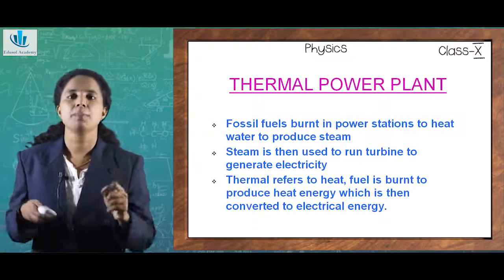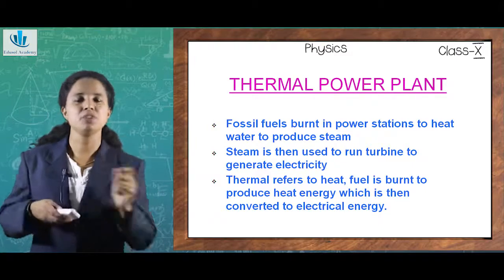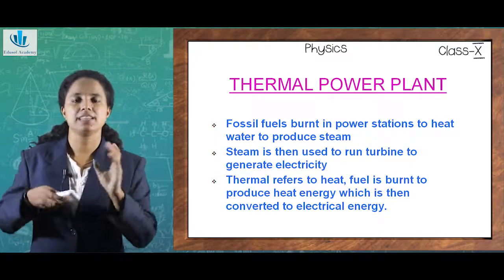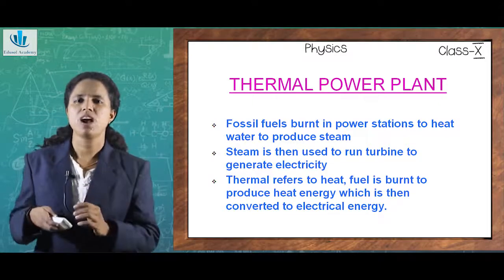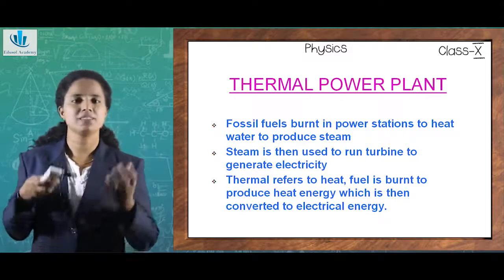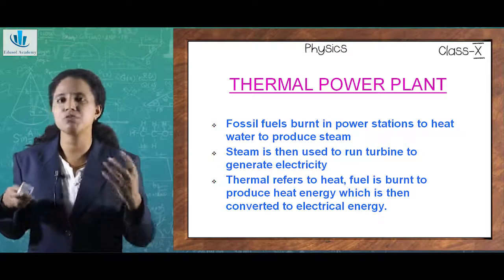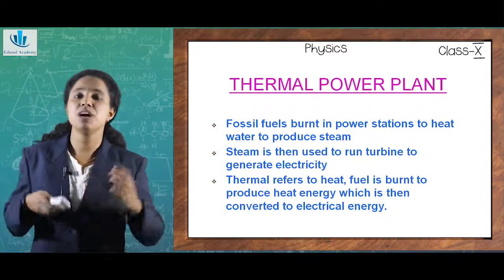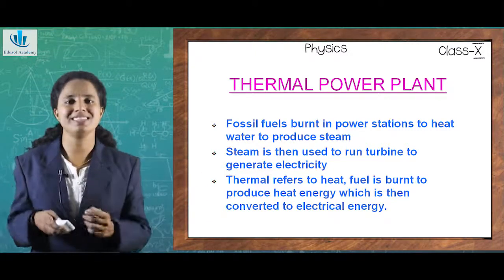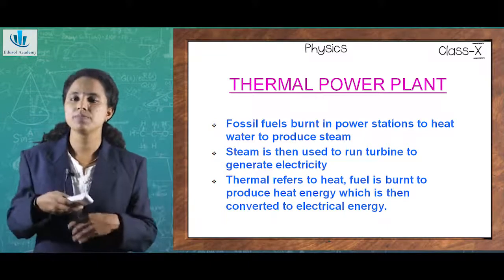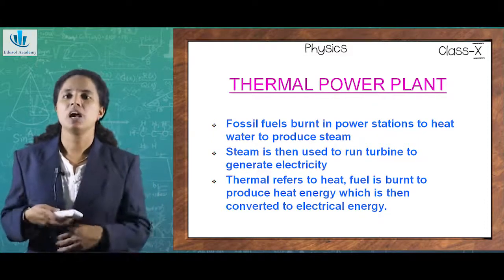Next are thermal power plants, which are conventionally used for large-scale purposes. As the name suggests, thermal energy is used for various purposes. The key ingredient in thermal power plants is fossil fuels — fuels obtained from fossils of animals decayed over millions of years: coal, oil, natural gas, petroleum, etc. The fossil fuels are burned in power stations to heat water, which produces steam.